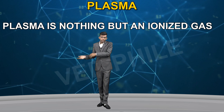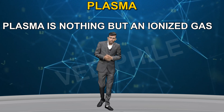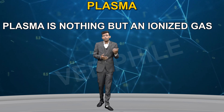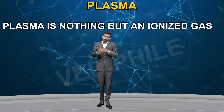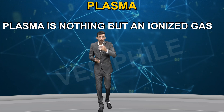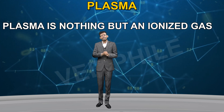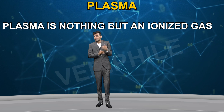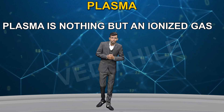Electrons are removed from the atoms, the atoms become ionized, and this ionized gas is what we call plasma. Plasma does appear in daily life in certain contexts.